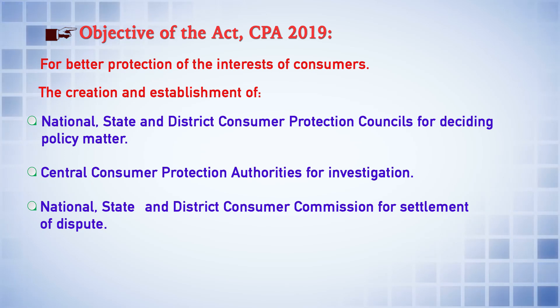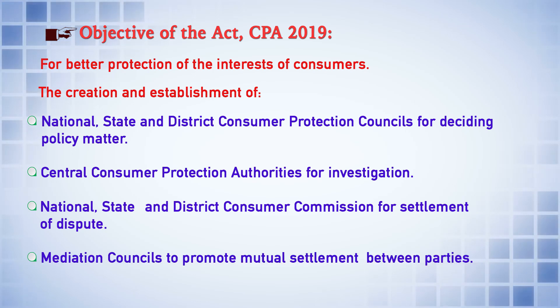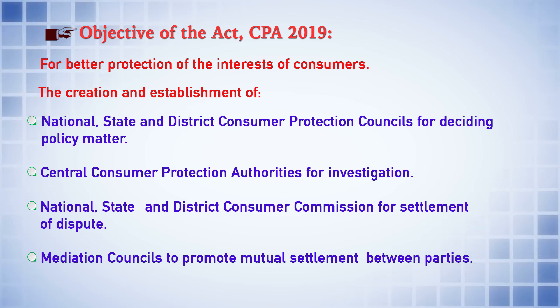These are the three institutional mechanisms provided under the Consumer Protection Act. In addition, the law for the first time brought in mediation — provided for the establishment of a mediation council for the purpose of promoting mutual settlement between parties. Primarily, given the large number of pending cases before courts, consumers are not getting required justice within a reasonable time. Therefore, the law provided a platform for settlement of disputes by the parties themselves. That is a new feature added in the 2019 Act compared to the 1986 Act.